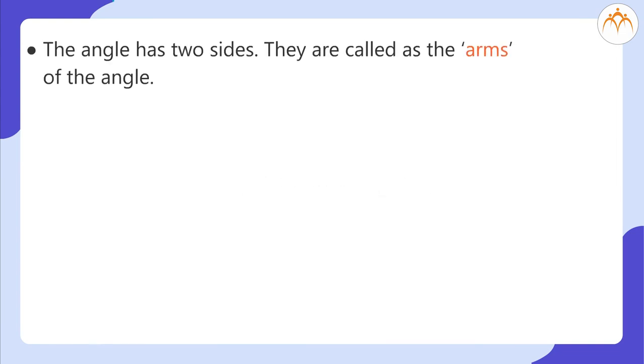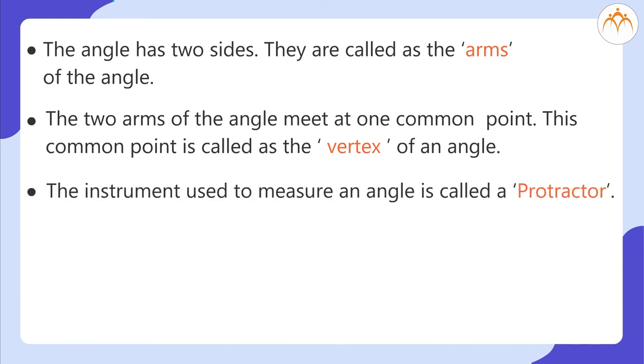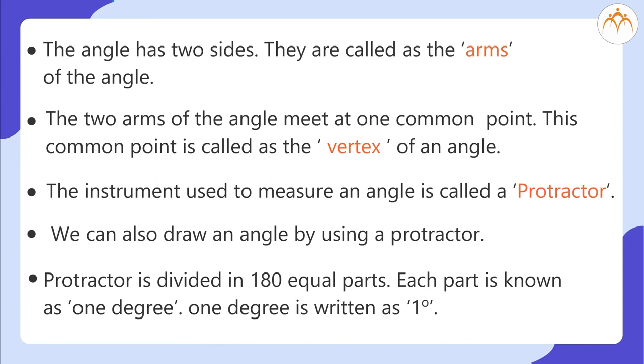What did we learn? The angles have two sides. They are called as the arms of the angle. The two arms of the angle meet at one common point. This common point is called as the vertex of an angle. The instrument used to measure an angle is called a protractor. We can also draw an angle using a protractor. Protractor is divided in 180 equal parts. Each part is known as one degree. One degree is written as one degree.